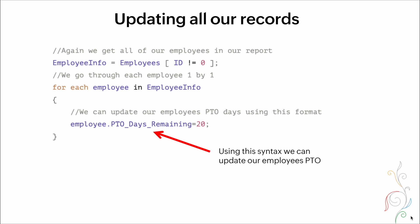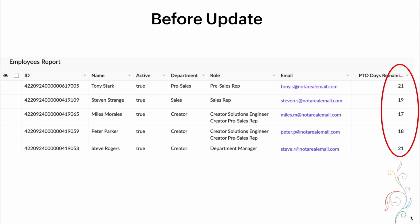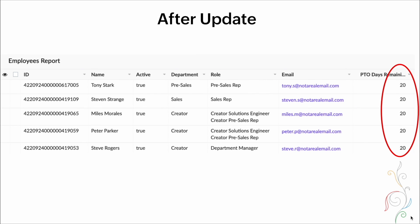Updating all the records. We have a fetch command getting every single record in the employees table, then iterating through every record and updating the PTO days remaining field to equal 20. Before the update, the PTO days remaining values are all different. After the update, every single field on the right side gets updated to the number 20.